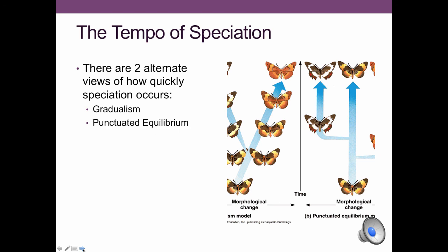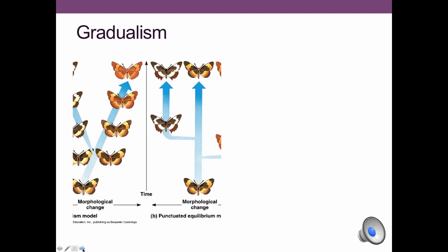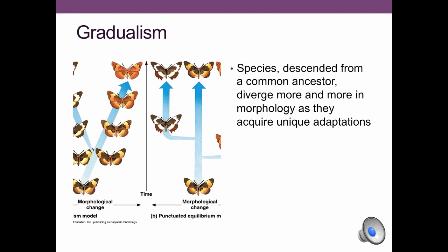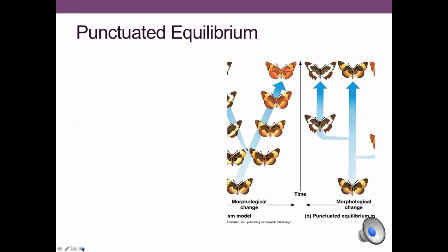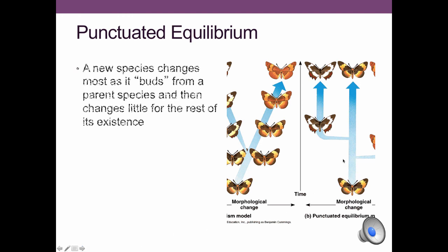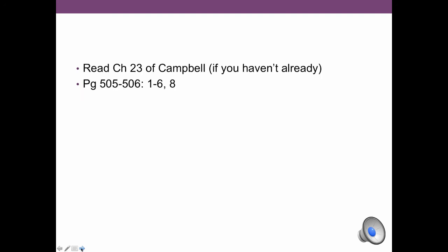There are two tempos of speciation: gradualism and punctuated equilibrium. Gradualism implies a slow, steady divergence over time, whereas punctuated equilibrium implies that divergence happens quite quickly, after which the species remains relatively constant for the remainder of its existence.